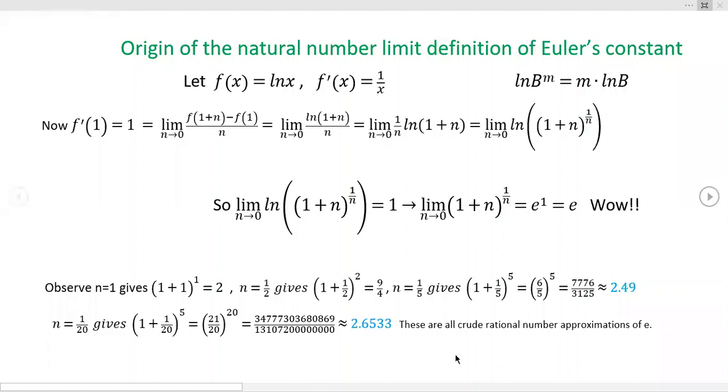This morning, hey, this one may drag a little bit. I hope you'll stick around. What I want to talk about is the origin of what I'm going to call the natural number limit definition of Euler's constant. By that I mean e, the famous number e, approximately 2.718.